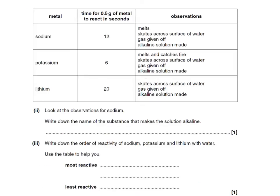Looking at the observations for sodium — it melts, skates around the surface of the water, the gas is given off, and an alkaline solution is made. Write down the name of the substance that makes the solution alkaline — we know this to be sodium hydroxide. Write down the order of reactivity of sodium, potassium and lithium with water. You should know that these metals get more reactive as you go down the group. Looking at the time taken to react, potassium is the fastest, followed by sodium, and lithium is the slowest. So the most reactive is potassium, then sodium, and least reactive is lithium.